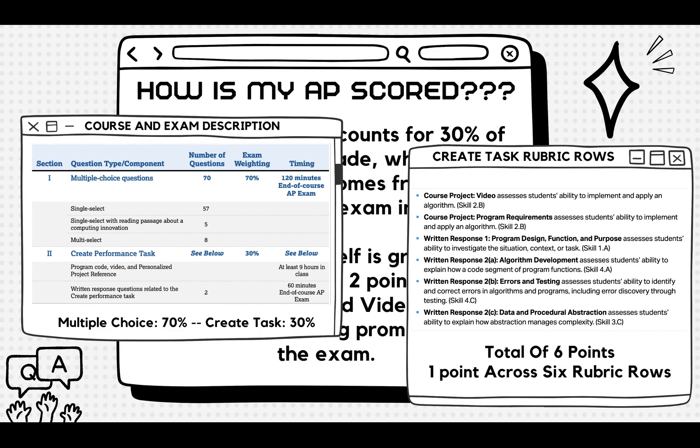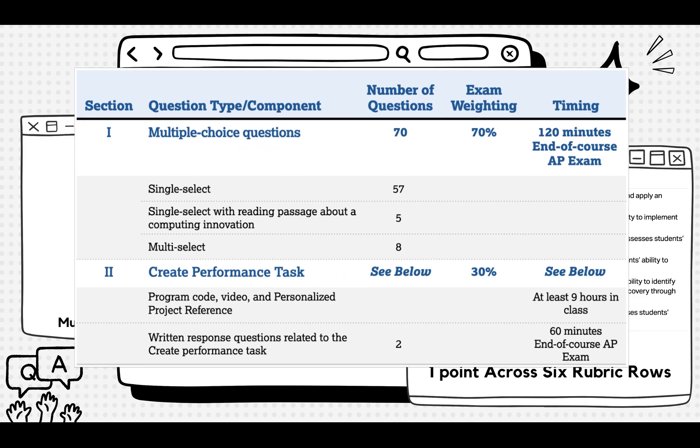Let's quickly review Part 1. The multiple choice exam is 70% of your grade. The other 30%, that is the Create Task. Notice it has two parts.